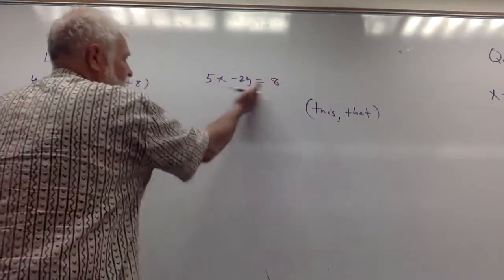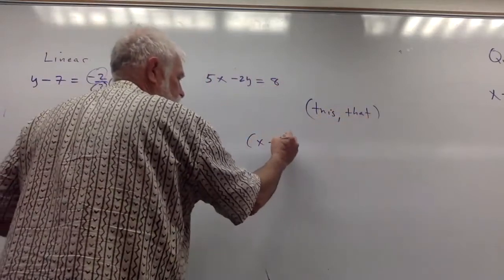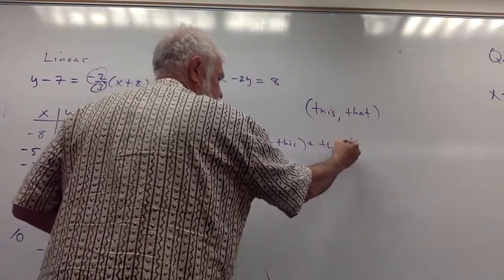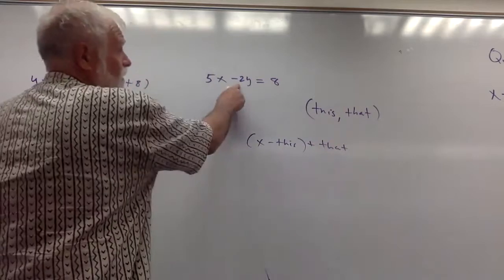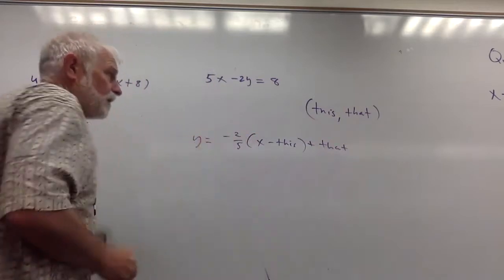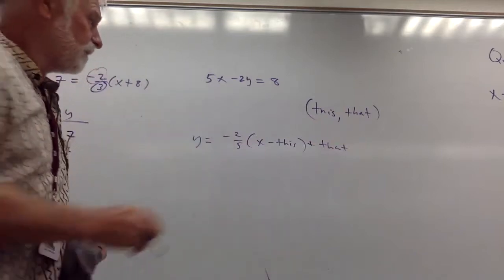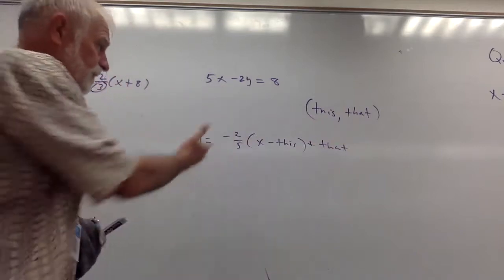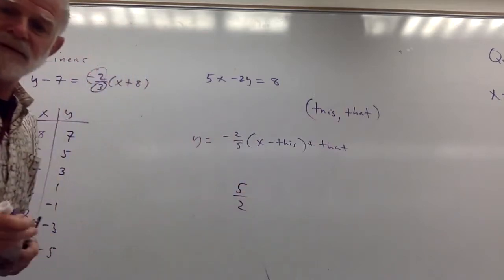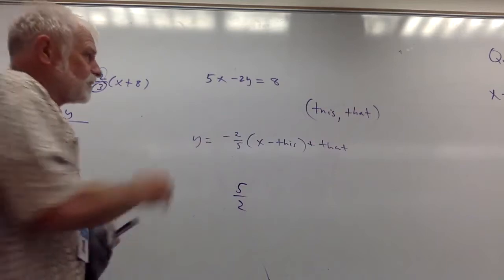Once you learn that, you understand it, then the shortcut is: write the equation of a line perpendicular to 5x - 2y = 8 through this point. We want to put this in, it's gone, we get that. What's the slope? It's -2/5. If you see the perpendicular, then you know the original slope's 5/2, right? Negative reciprocal.